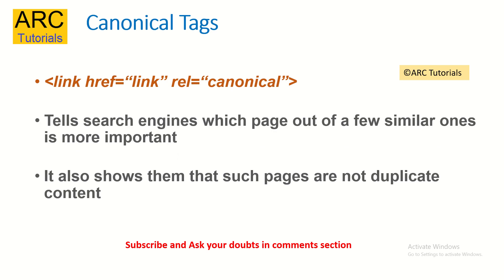Then come the canonical tags. Canonical tags tell the search engines which page out of a few similar ones is more important, showing them that such pages are not having duplicate content. If you have multiple content pages and you want to indicate which ones are similar, you can use rel equal to canonical. This is very useful in identifying which web pages have duplicate content. Make sure you start using canonical attributes on your links in your application.